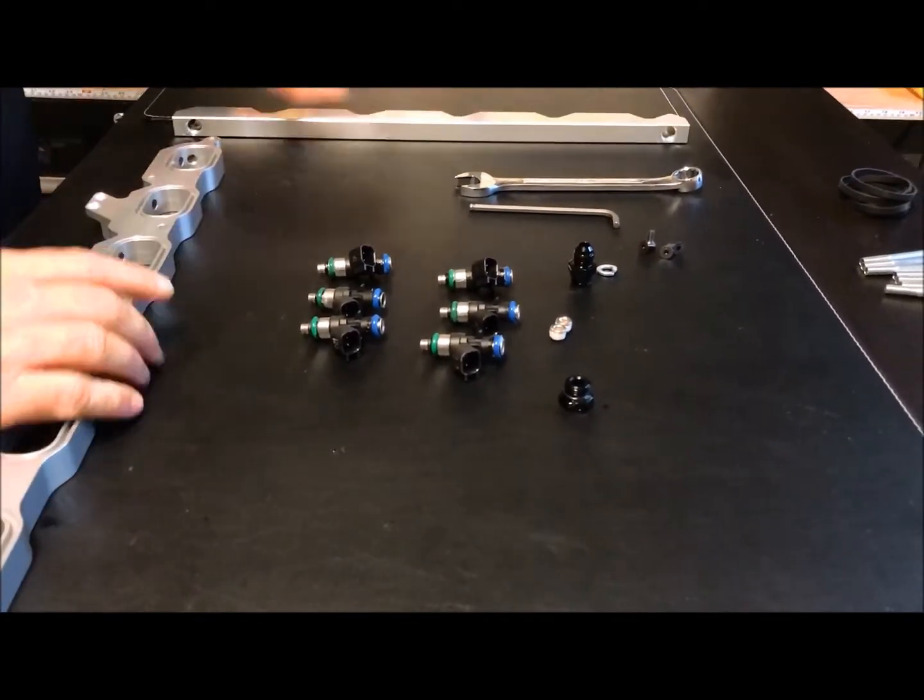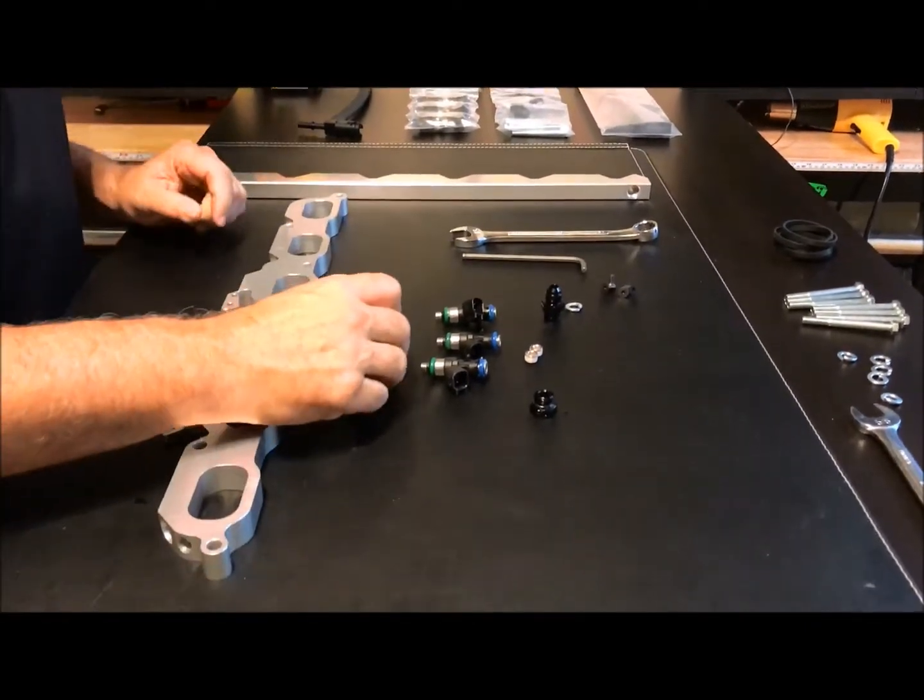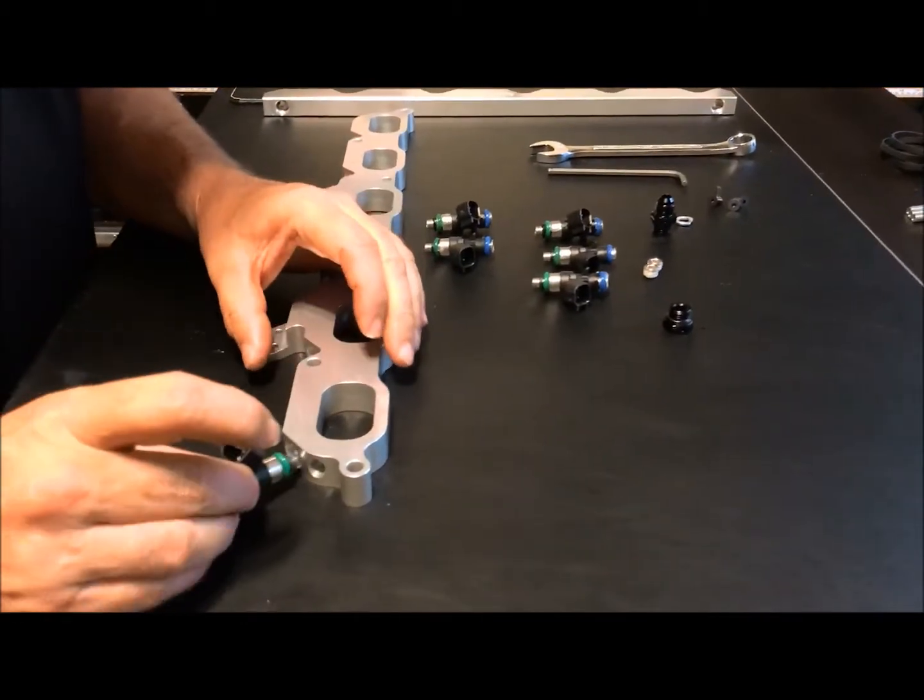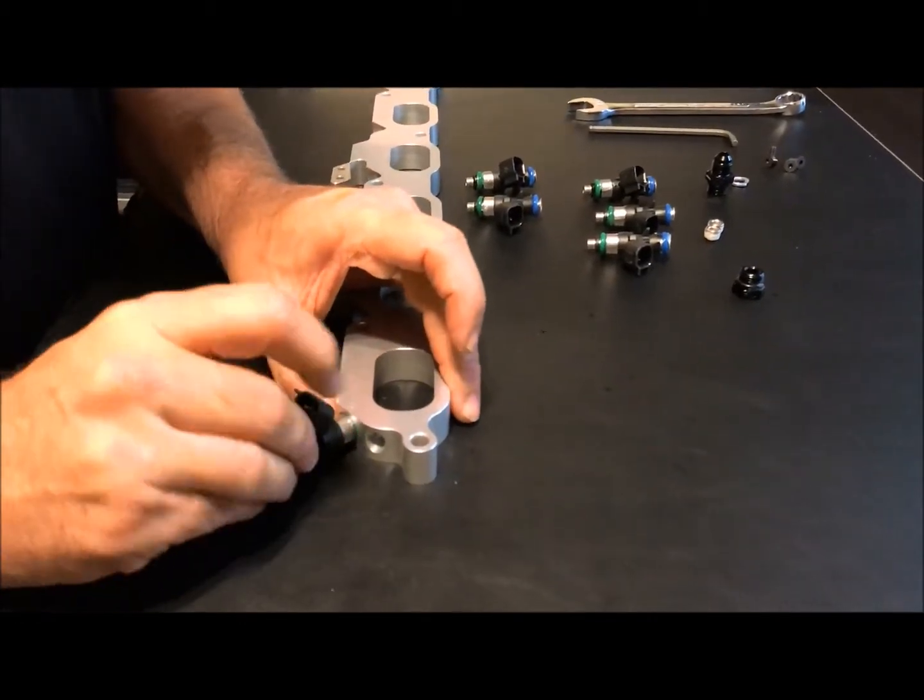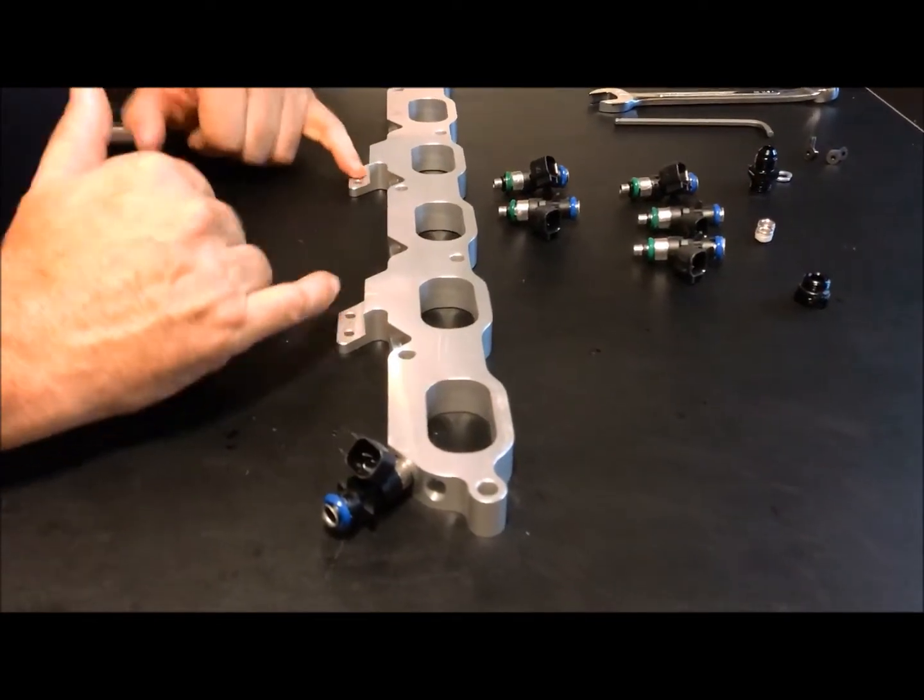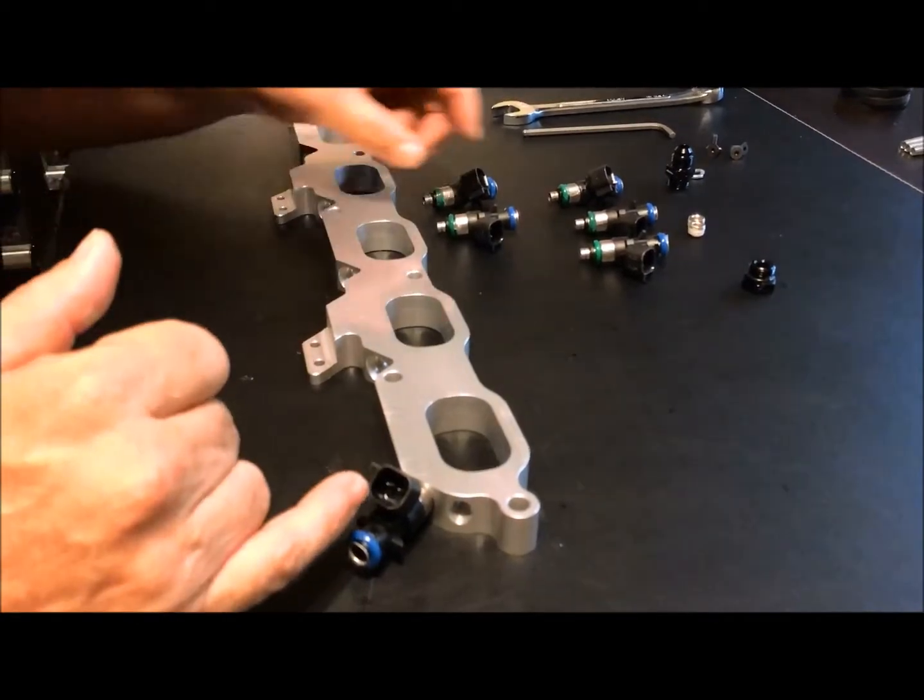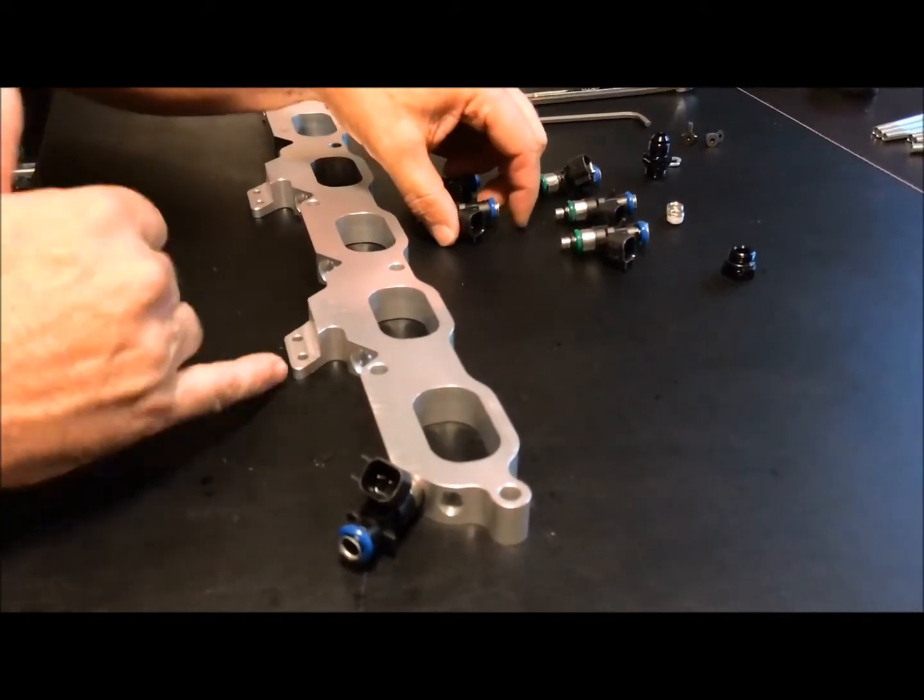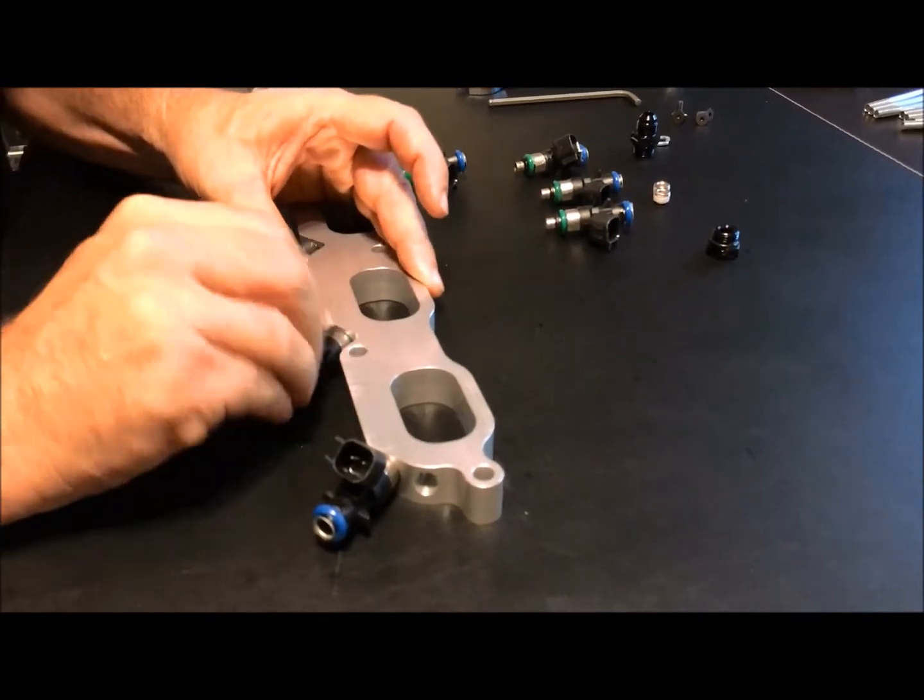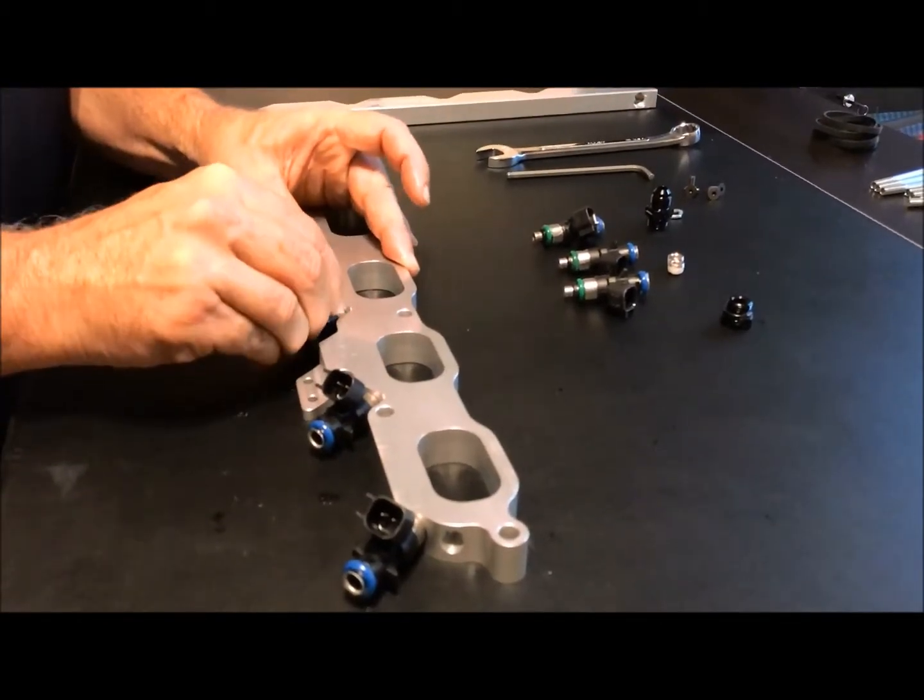So when we do these, we'll go ahead and we'll do the spacer first. In this case, for this rail, these injectors need to be installed with the plug up. So right now we have the tab for connecting the rail and the spacer together. Install, put that face down and then install the injectors face up. So just kind of twist them a little bit as you install them, get them seated in place.